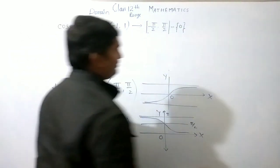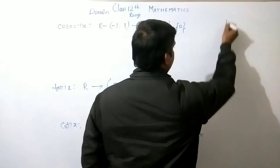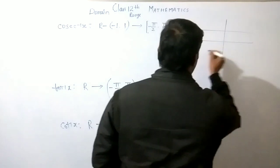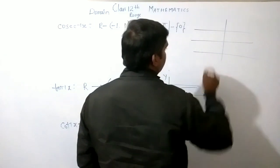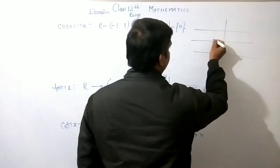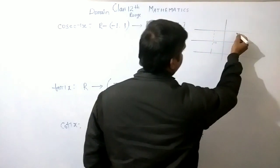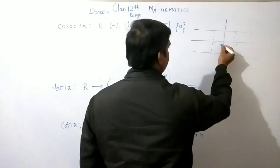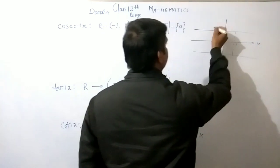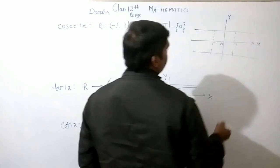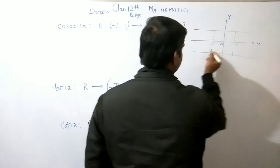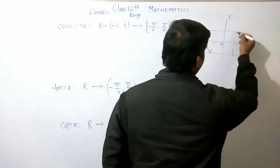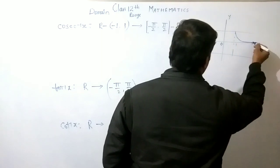Graph: this is -1, this is 1. Origin, x-axis, y-axis. This is the graph.